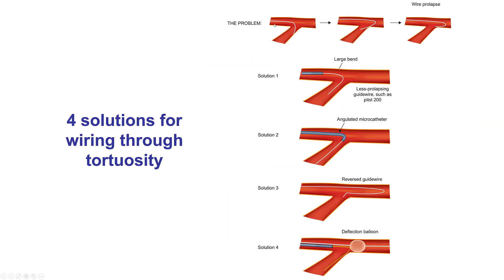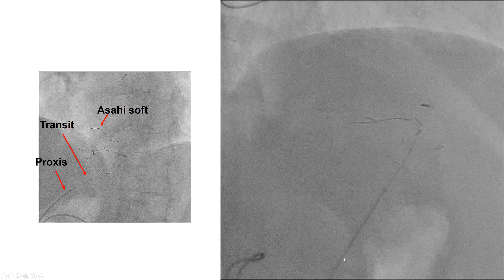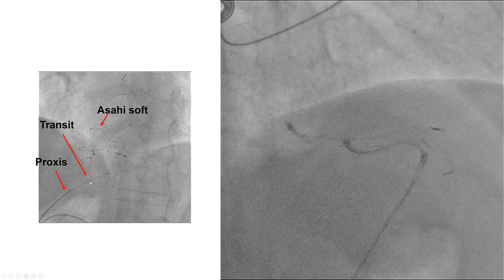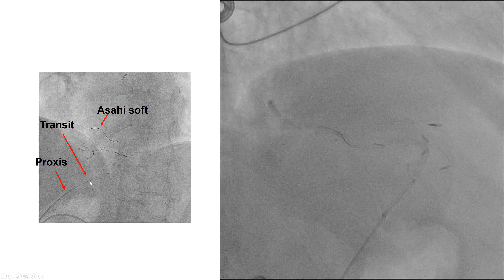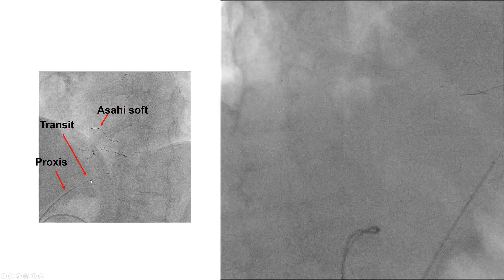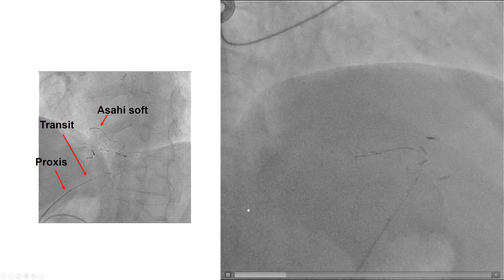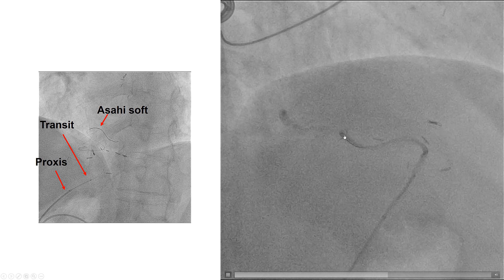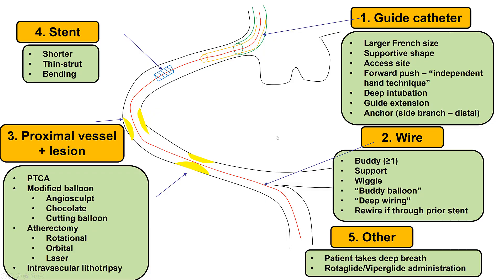For wiring through tortuosity, apart from microcatheters and polymer jacket wires, other options include forming different bends of the wire using an angulated microcatheter, using the reversed guide wire technique, or a deflection balloon. In this case, we were able to use a Transit microcatheter — which we don't commonly use today, but was quite commonly used then — and through that we were able to advance a soft guide wire all the way through the touchdown into the distal right coronary artery.